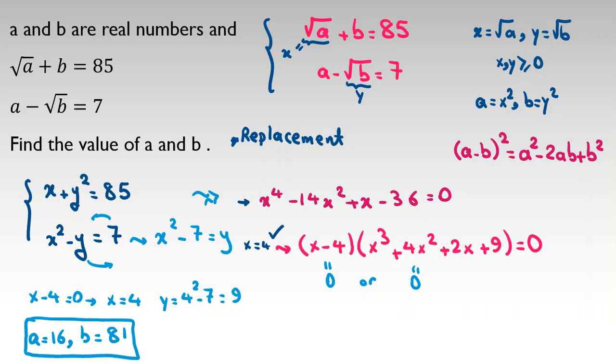Now we should consider this case that x cubed plus 4x squared plus 2x plus 9 equals 0. We can say it equals 0 and we know x is at least 0. So each term is at least 0, and the whole term is positive. So the only answer is this.